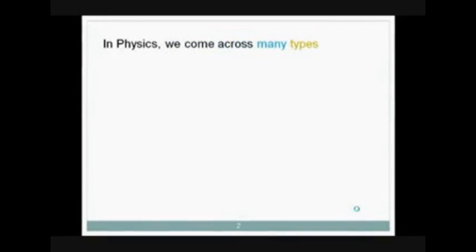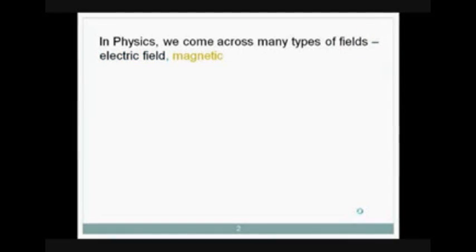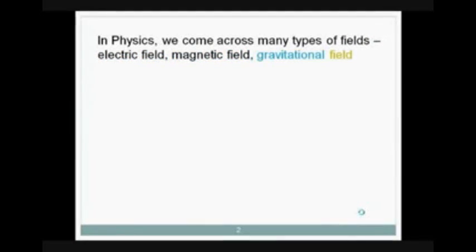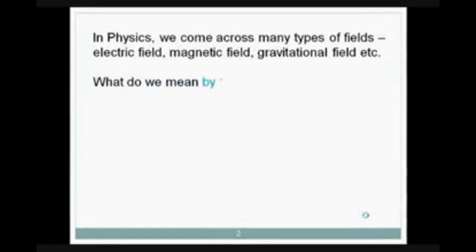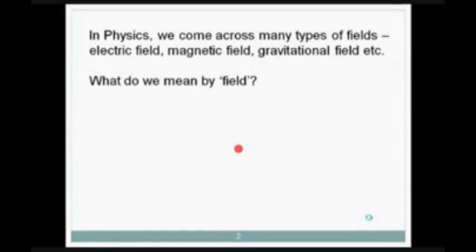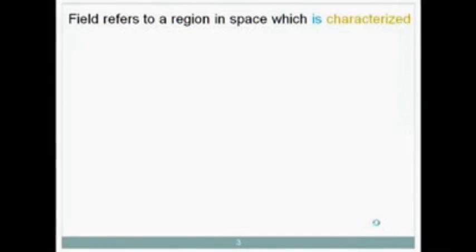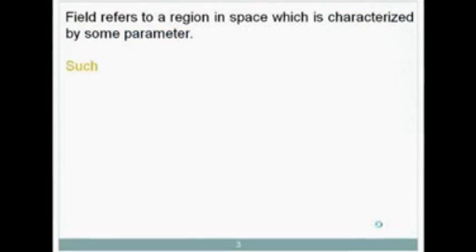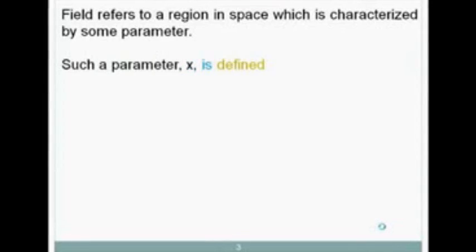In physics, we come across many types of fields. Electric field, magnetic field, gravitational field, etc. What do we mean by field? Field refers to a region in space, which is characterized by some parameter. Such a parameter, let's call it x, is defined at every point in the field.